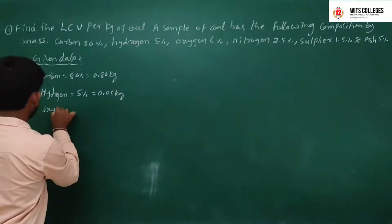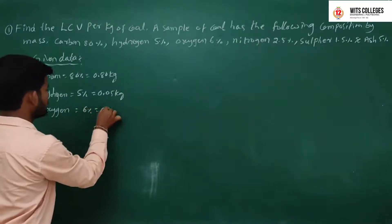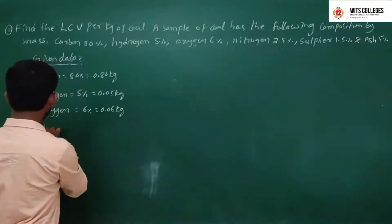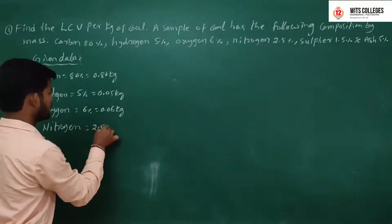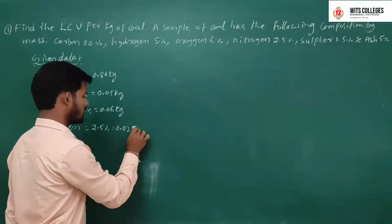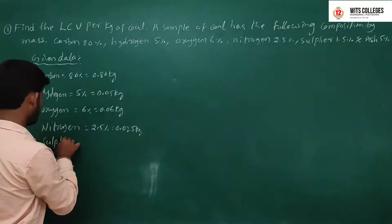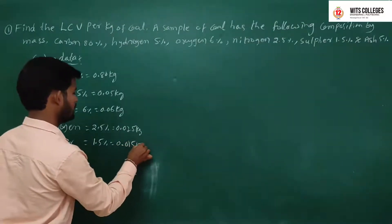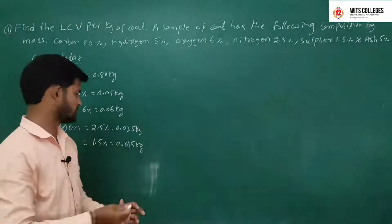Oxygen = 6% = 0.06 kg. Nitrogen = 2.5% = 0.025 kg. Sulphur = 1.5% = 0.015 kg. Remainder is ash.